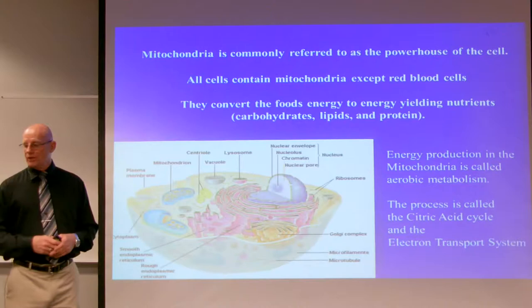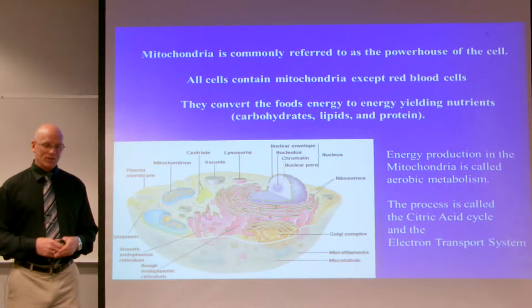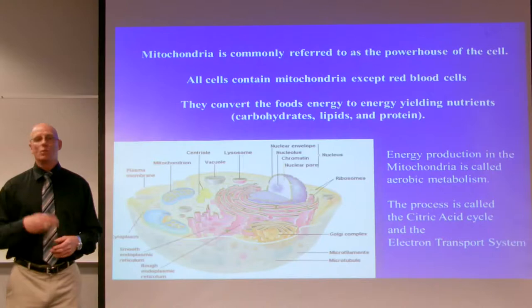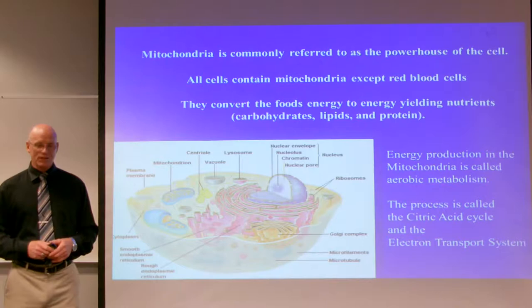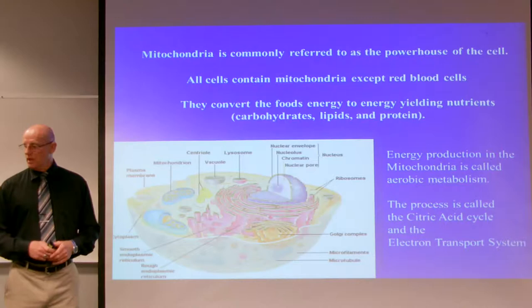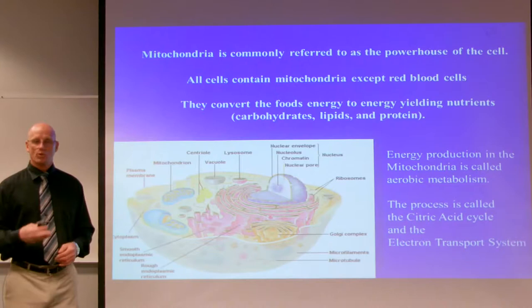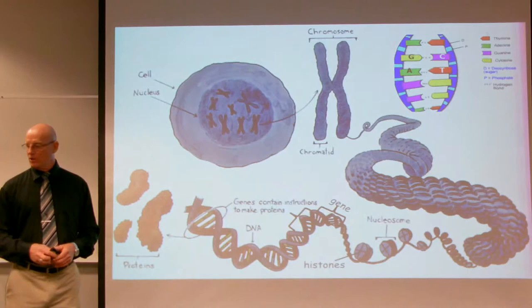The mitochondria is commonly referred to as the powerhouse of the cell because it contains two cycles: the citric acid cycle and the electron transport system, where you actually receive the adenosine triphosphates — the energy. All cells contain mitochondria except red blood cells, and some cells contain many mitochondria. They convert foods — carbohydrates, lipids, and proteins — to energy. Energy production in the mitochondria is aerobic metabolism, meaning it needs oxygen.